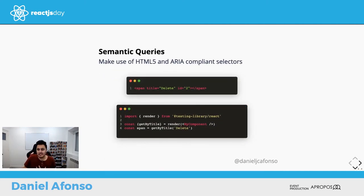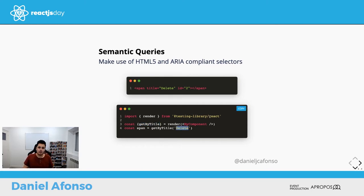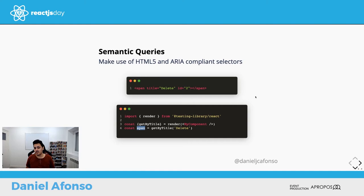For semantic queries, imagine our DOM has a span with title 'delete'. We use getByTitle('delete') — the library searches the DOM and returns that span. Keep in mind the title attribute is not consistently read by screen readers and is not visible by default for sighted users, which is why these queries should only be a second choice.